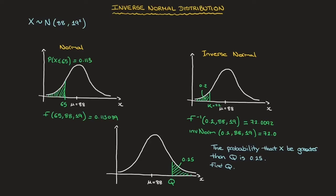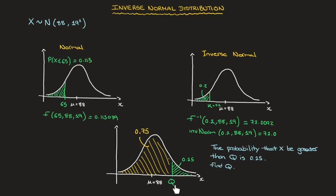This example brings up a very important fact: the inverse normal function can only work with left tails on the bell curve. Since this green area corresponds to a right tail, we need to turn this into a left tail problem by considering the rest of the area under the bell curve. Rather than working with that green area, we'll work with the yellow area, which is 1 − 0.25 = 0.75. This yellow area is a left tail, so we can use the inverse normal distribution function to obtain the value of q.